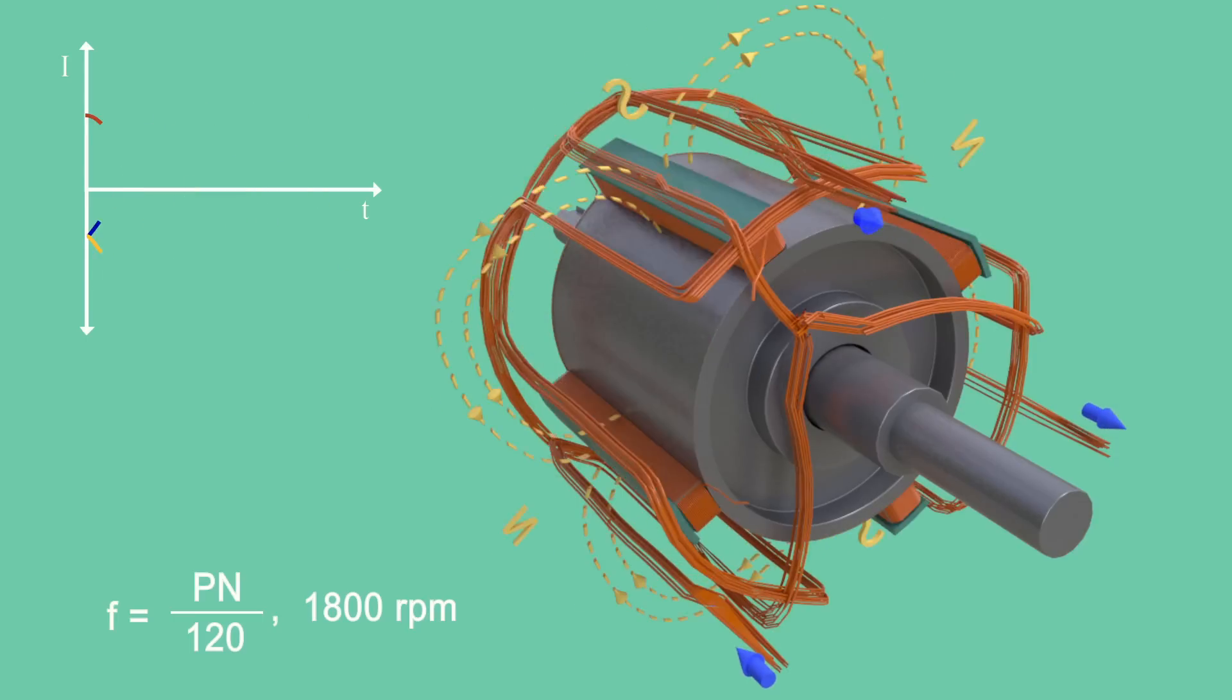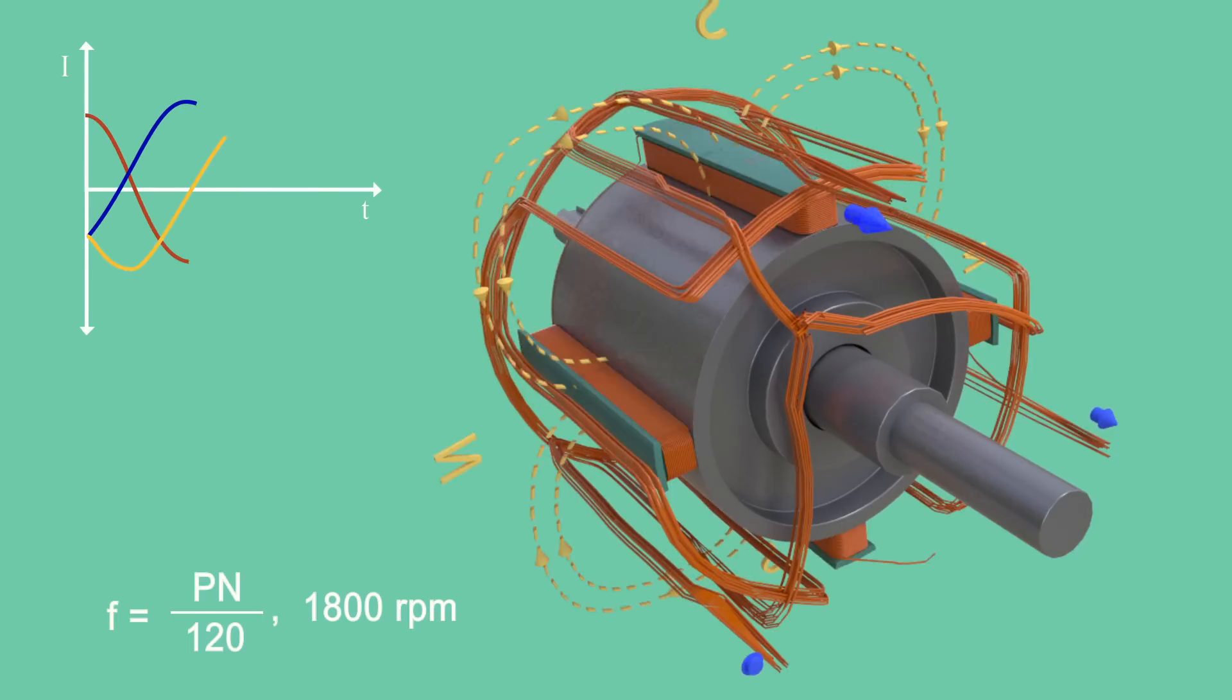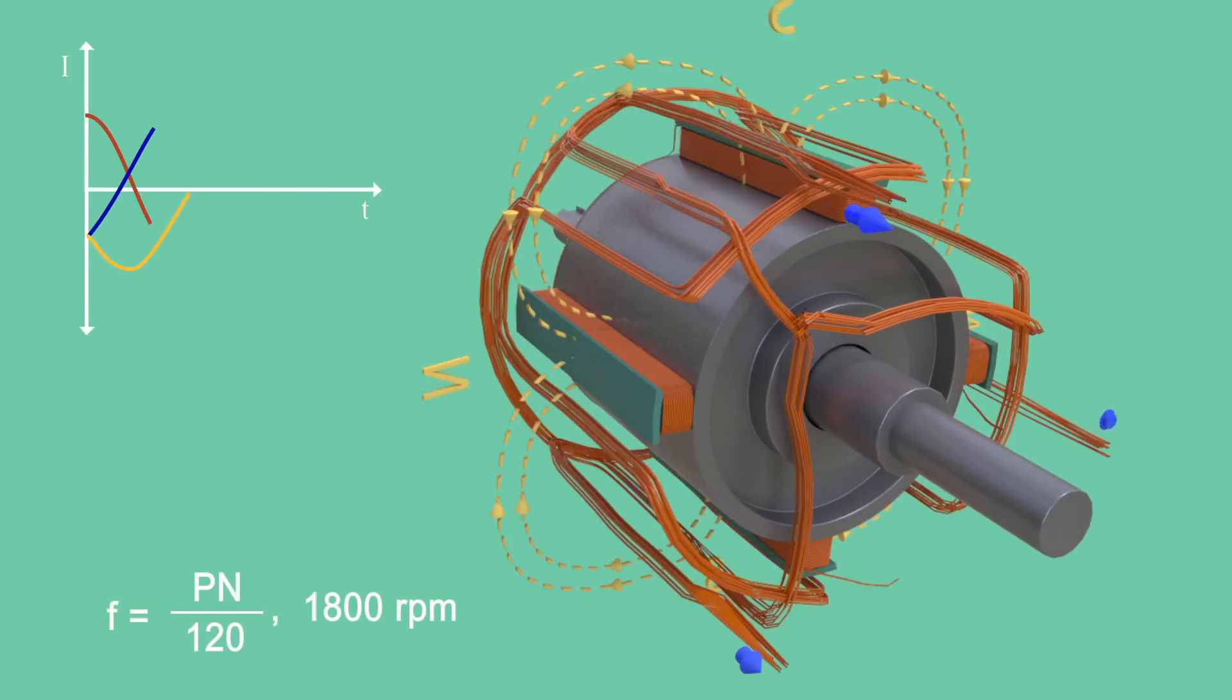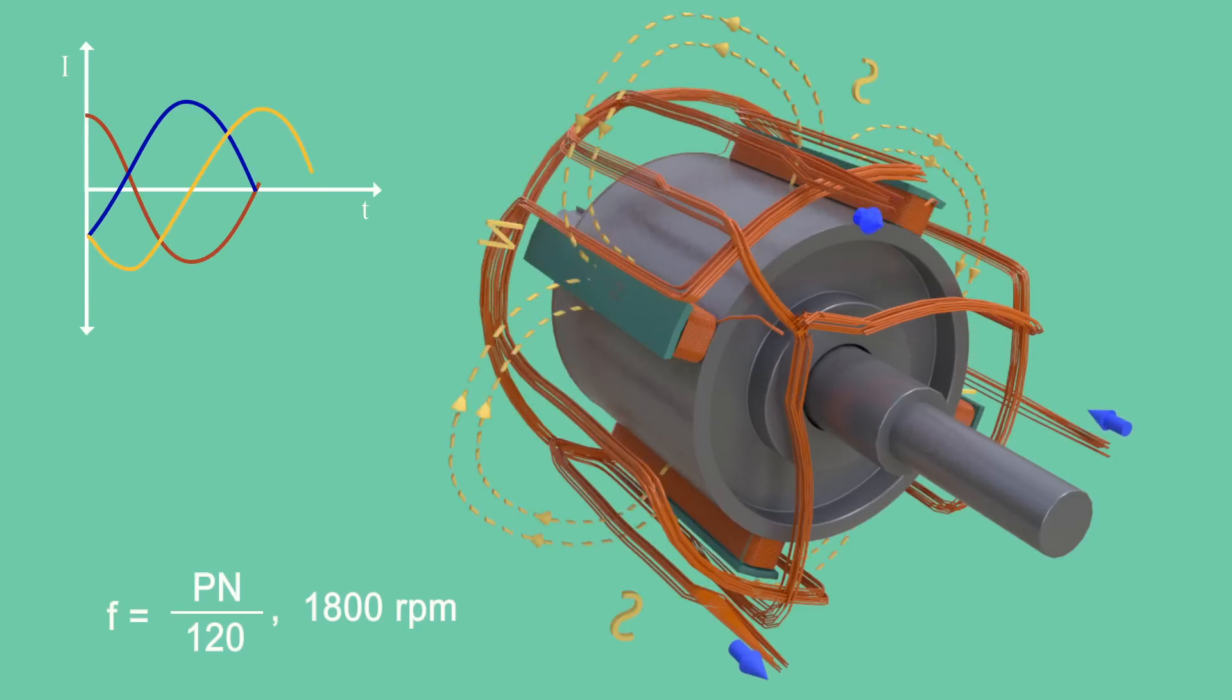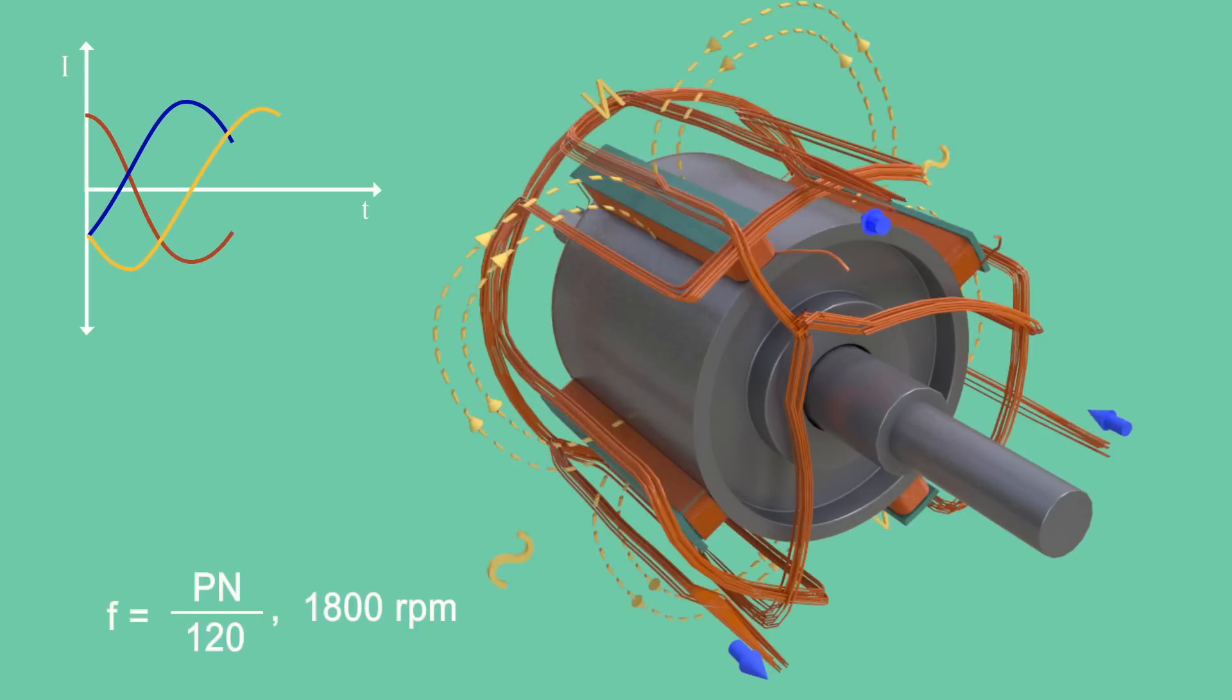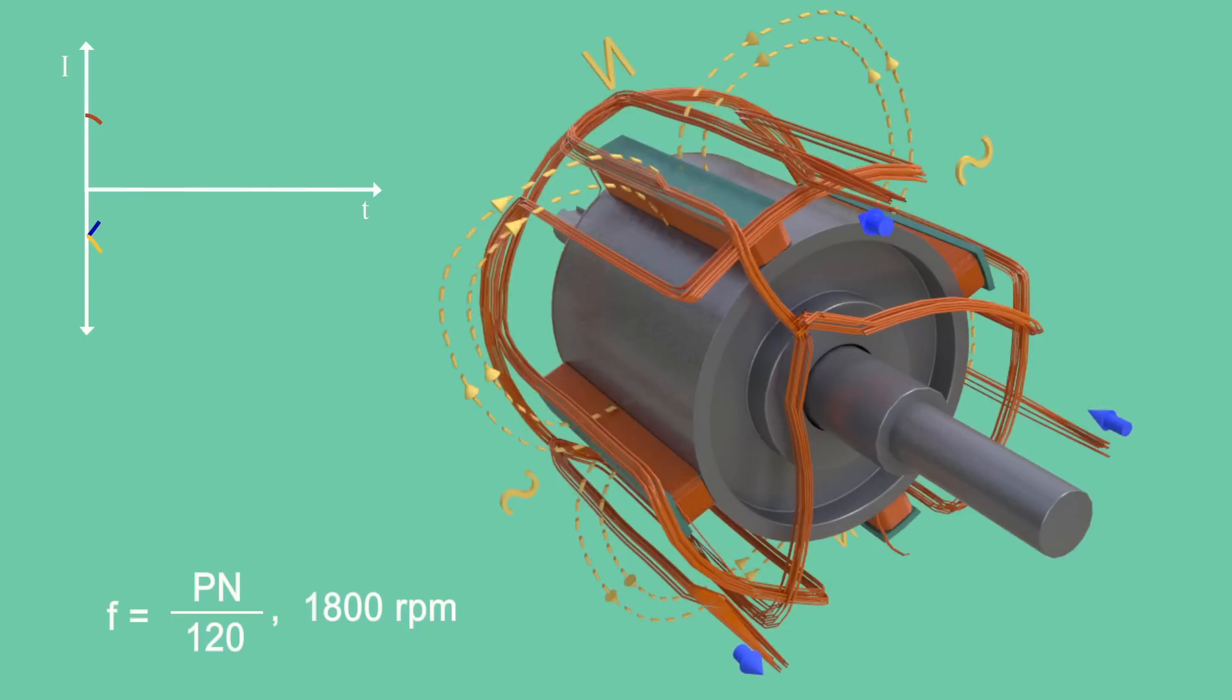Such huge RPM will induce a tremendous centrifugal force on poles of the rotor and it may fail mechanically over time. So salient pole rotors are generally having 10 to 40 poles, which demands lower RPM.